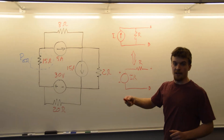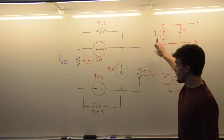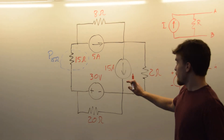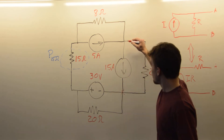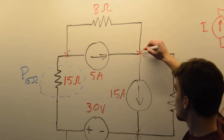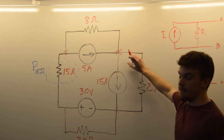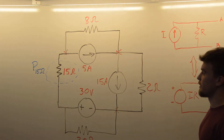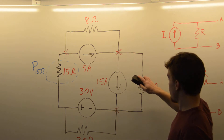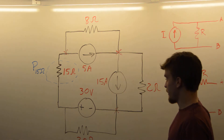So if we look at our circuit here, we have two such cases — two cases where we have a current source in parallel with a resistor. This set right here is in between these two points, and this set here is in between these two points. So what we're going to do is transform them into a voltage source in series with a resistor. The voltage source for this set is going to be equal to the current times the resistor, which is going to be equal to 30 volts.